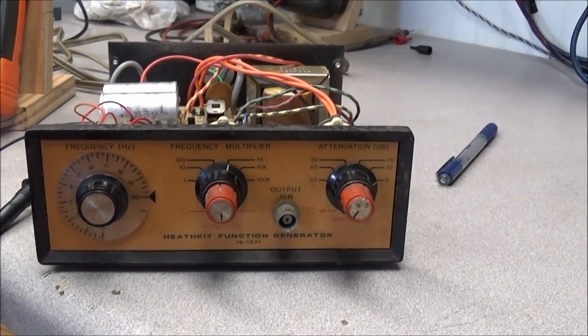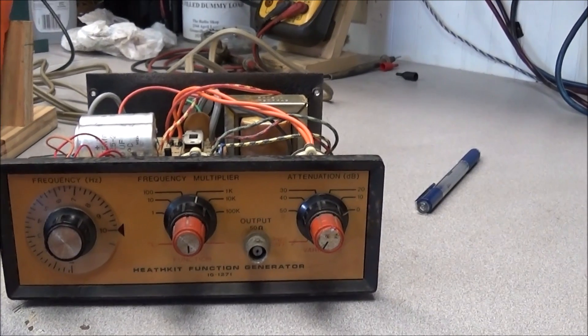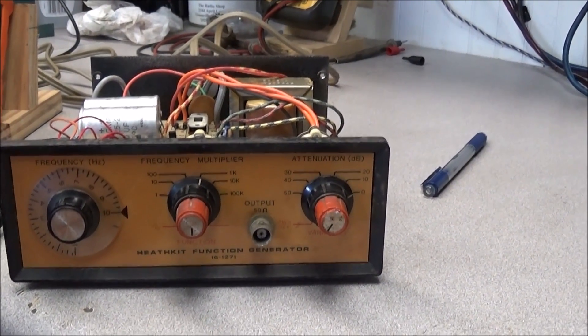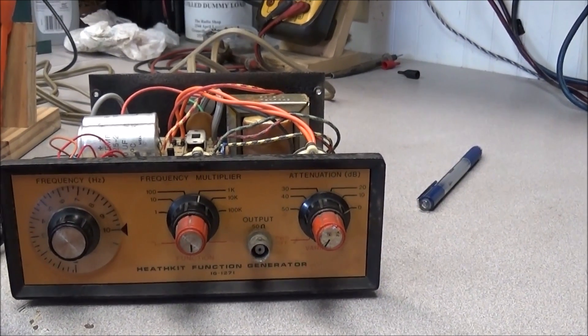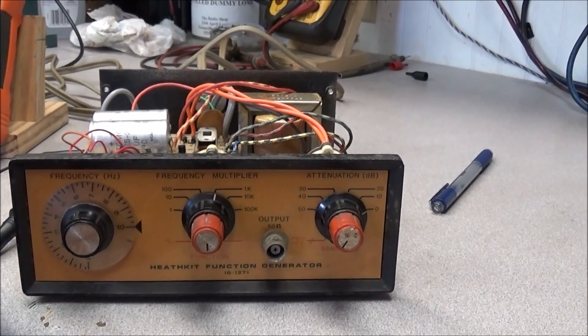Welcome. Today on the bench I have a Heathkit function generator model IG-1271. I picked this up at a flea mall about a week ago for five bucks, brought it home, hooked it up, and turned it on, and nothing happens.